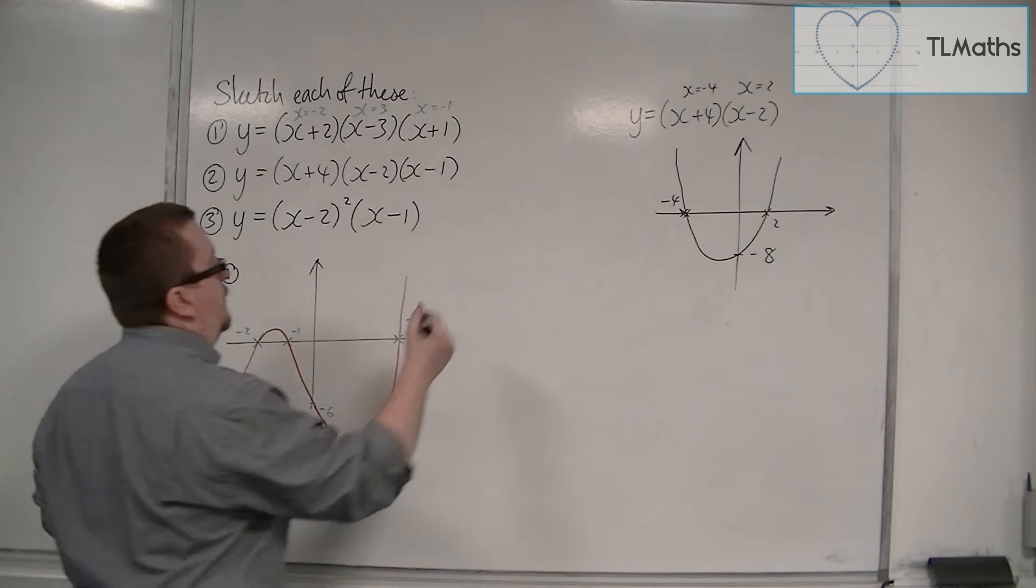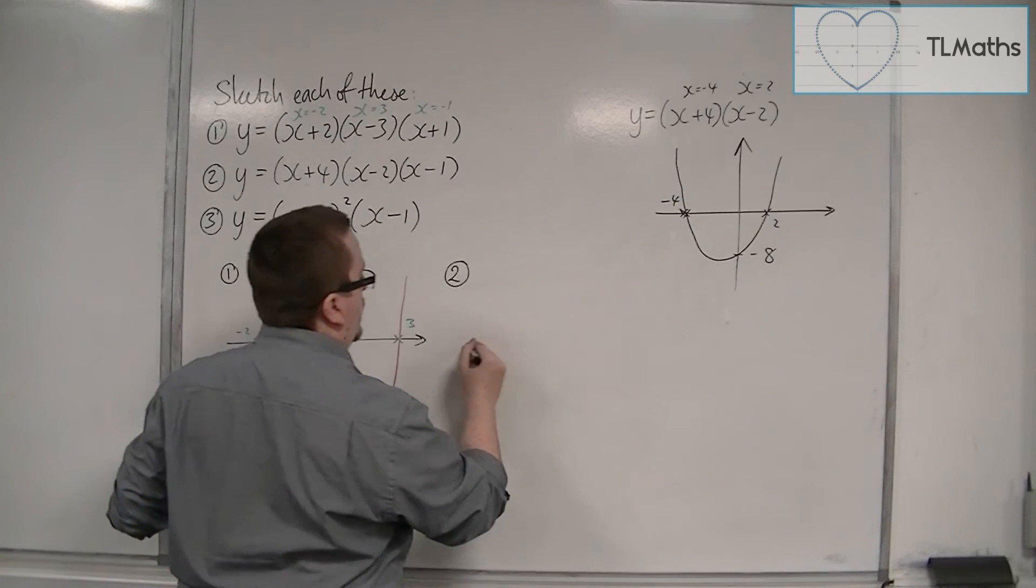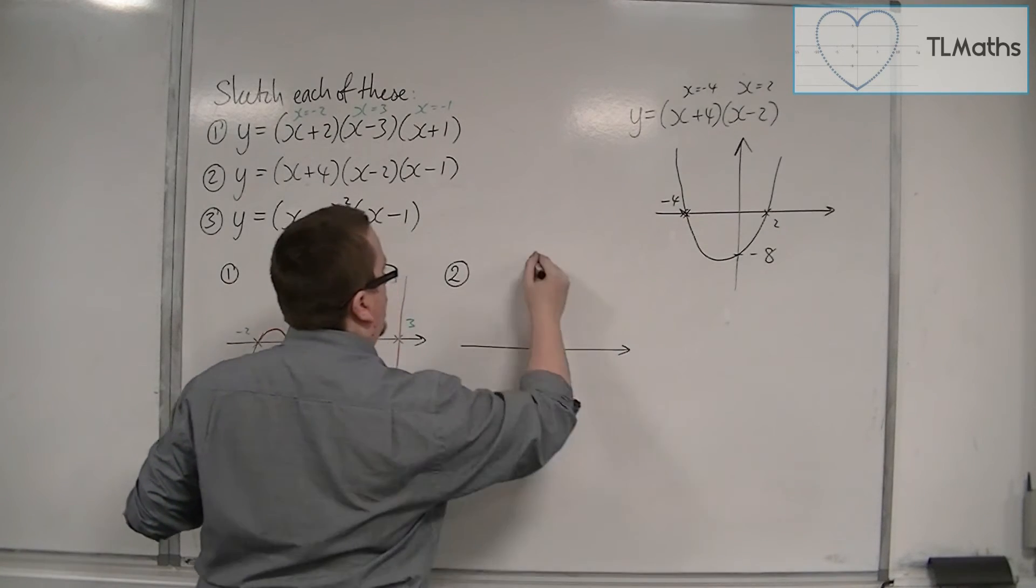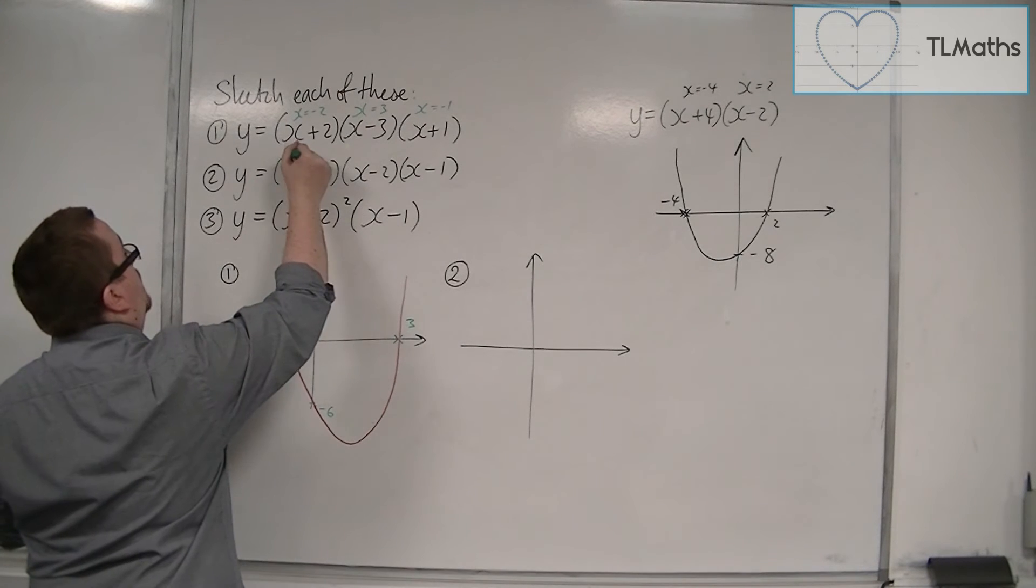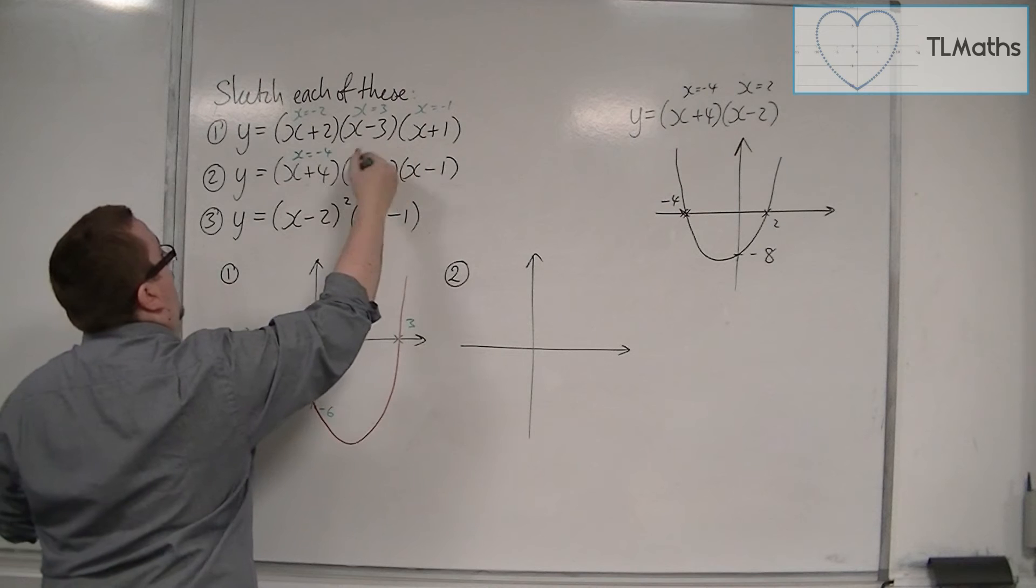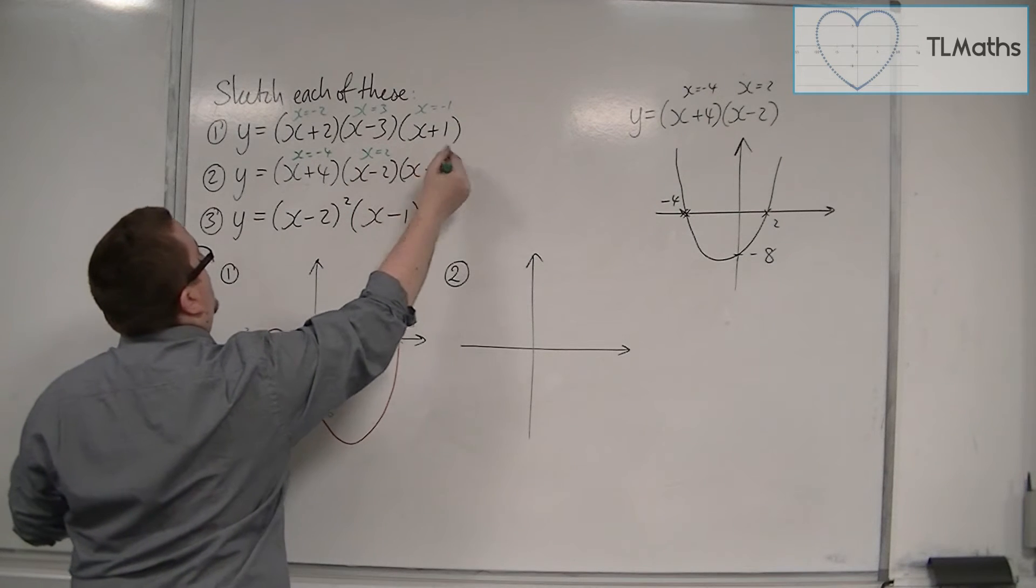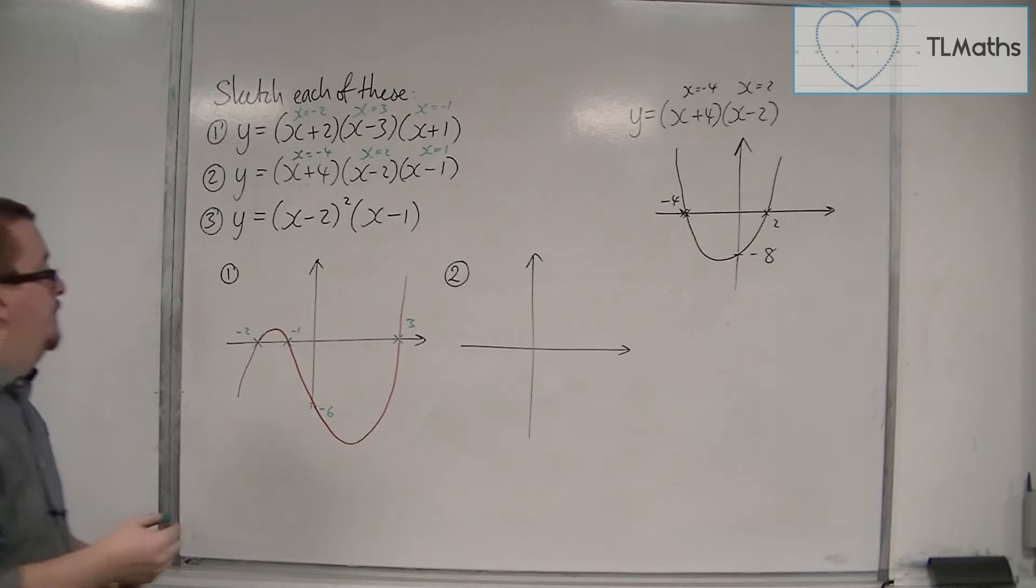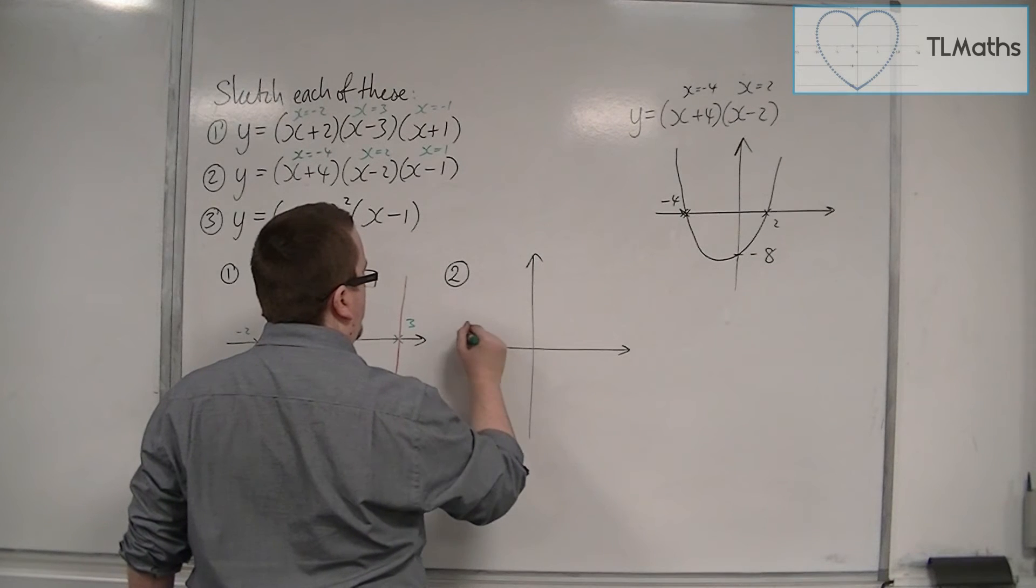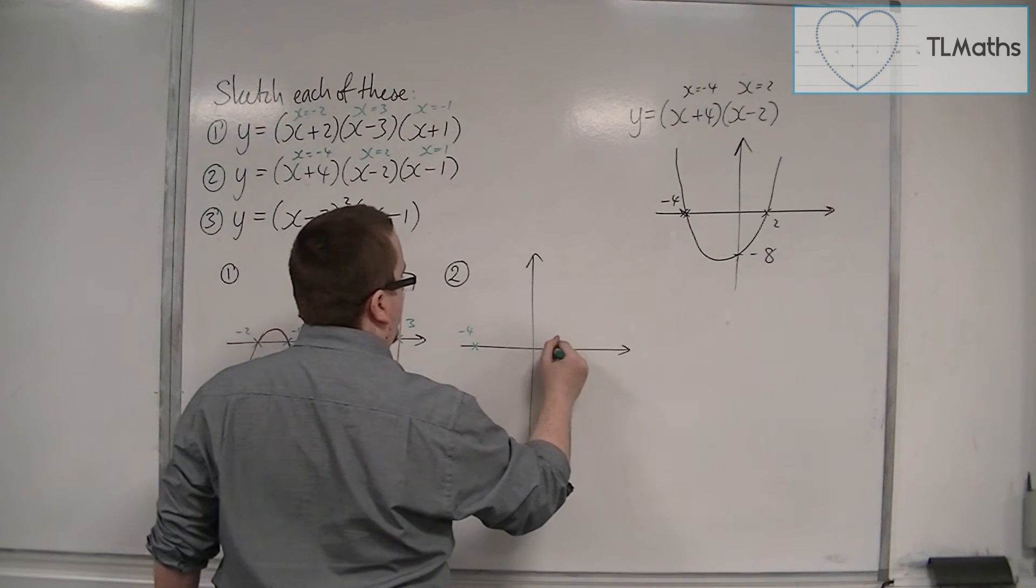Let's look at number 2. We can see that it's crossing the x-axis at minus 4, at 2 and 1.